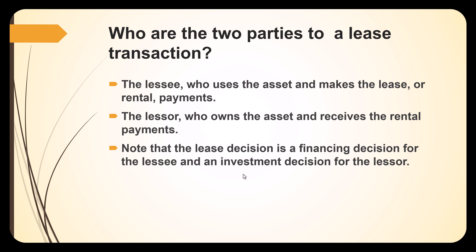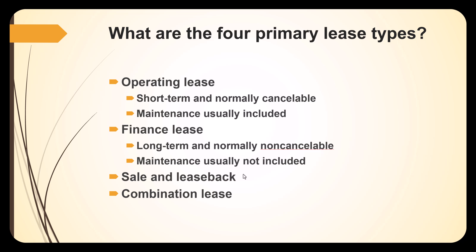There are four primary types of leases. An operating lease is typically very short-term, usually cancelable, and maintenance is usually not included in the lease agreement. A finance lease is a long-term lease, normally non-cancellable, and maintenance is usually not included either.